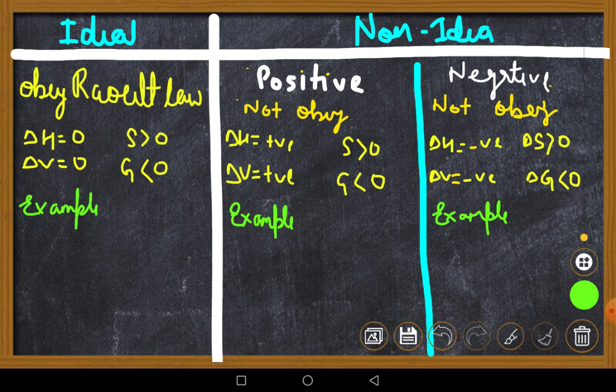The ideal solution will obey Raoult's Law, that we know. Now, delta H is equal to zero, delta V is equal to zero. Now one thing that we have to keep in mind is that S is the biggest point of the answer and G is the smallest point of the answer. So if in the paper I ask you to tell about the condition for positive...